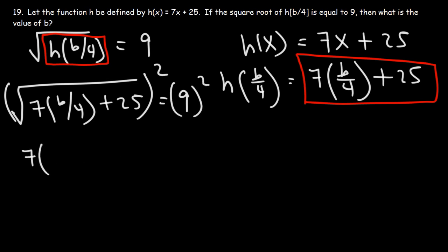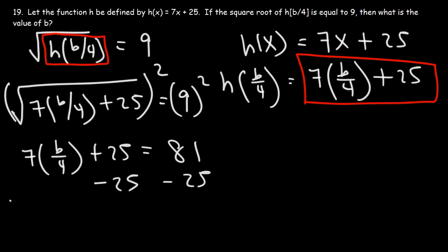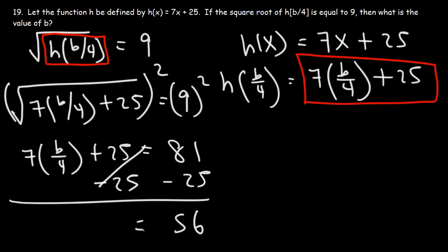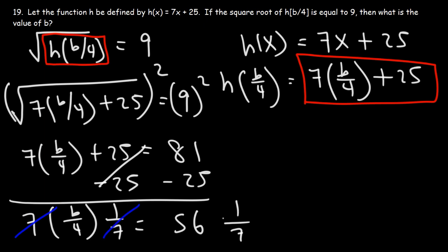On the left side we have 7 times b over 4 plus 25, and on the right side we have 9 squared. 9 squared is 81. Now let's subtract both sides by 25. 81 minus 25 — 81 minus 20 is 61, and 61 minus 5 is 56. So we have 56 is equal to 7 times b over 4. Let's multiply both sides by 1 over 7 — this is the same as dividing both sides by 7, and the 7s will cancel on the right.